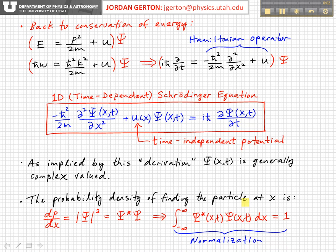If you take the squared magnitude of the wave function, remember that ψ is complex, so in order to take the squared magnitude of a complex number, you multiply the complex conjugate ψ* times ψ.